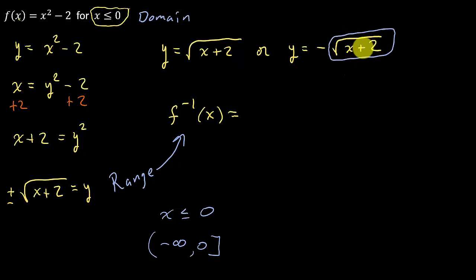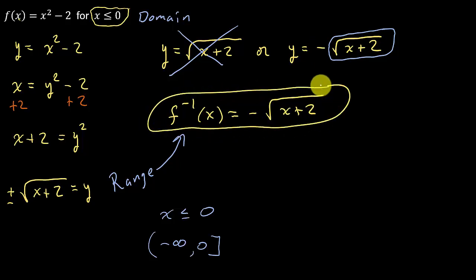But I have a negative in front, so that's going to make it negative infinity to 0. So that means this one is not a solution, and our solution would be this one over here, -√(x + 2). And so, there is your inverse.